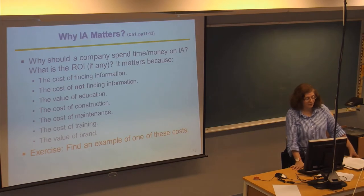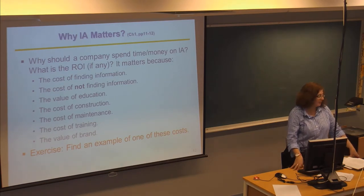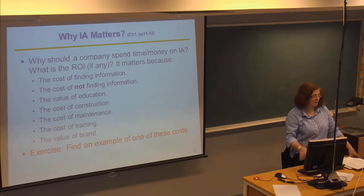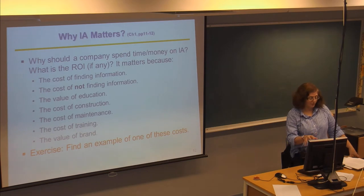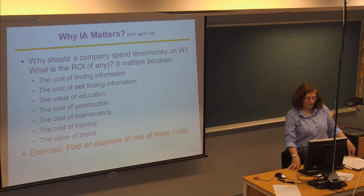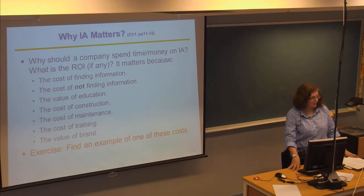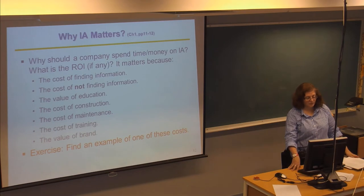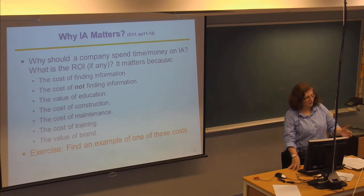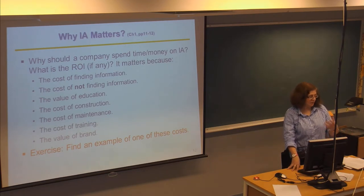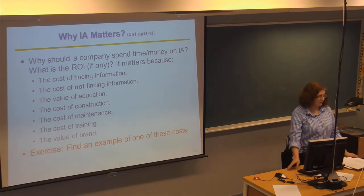Can you think of any example, like on a specific company website perhaps, like an example of how the information architecture could relate to the cost, one of these costs. So, maybe they do it correctly or they don't do it correctly. And then if they don't do it correctly, it could have implications for one of these costs.